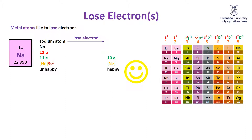It still has 11 protons, so now there's an imbalance of charge: 11 positives in the nucleus, only 10 negatives outside. Overall it is positive, and we write that as Na⁺. Things that are positive are called cations, so we call this a sodium cation. Sodium atom: unhappy. Loses an electron to make a sodium cation: happy.